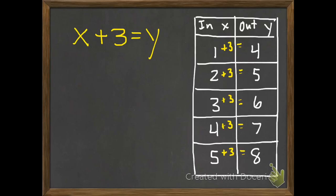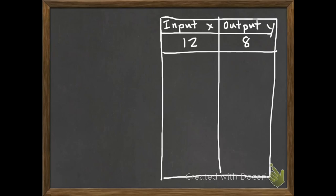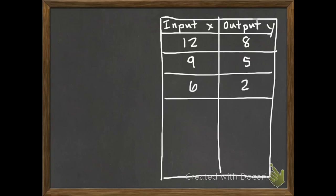This next one I want you to try along with me. Go ahead and draw this in your notebook — try to leave room to write out the full words 'input' and 'output' instead of just 'in' and 'out', and label what variable you're going to use. I always use x and y, but you could use w and z — whatever you want. So if we put in a 12 we get out an 8; if we put in a 9 we get out a 5; 6 and 2; 4 and 0. That should be enough to find our pattern.